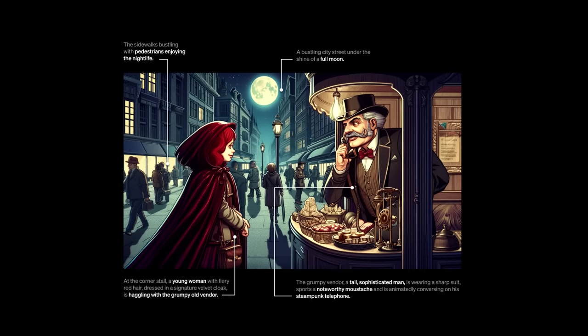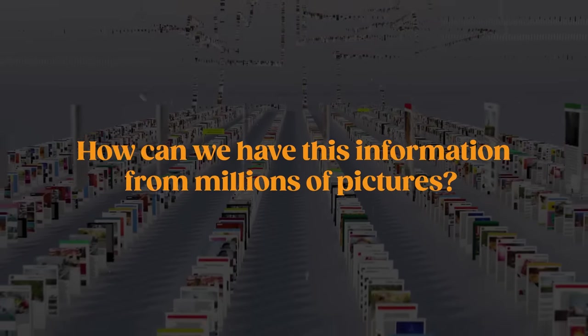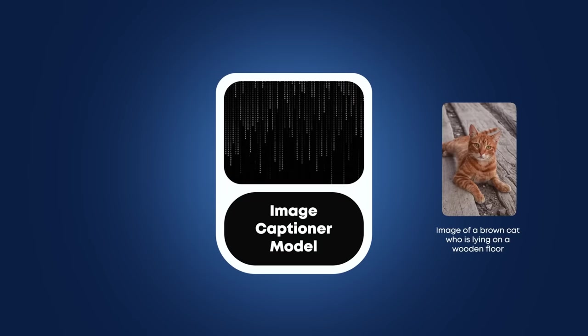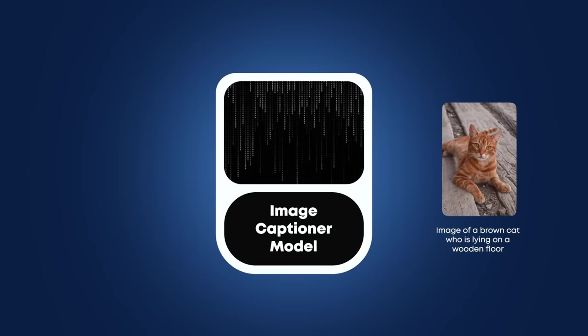What if you would instead have the perfect captions? Super detailed, with all the spatial information needed to recreate the image. But how can we have this information from millions of pictures? We could hire hundreds or thousands of humans to describe images accurately, or we could use another model to understand images and generate better captions first. Well, that's what they did.